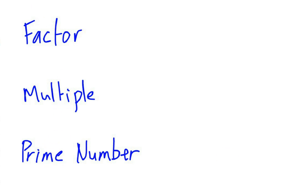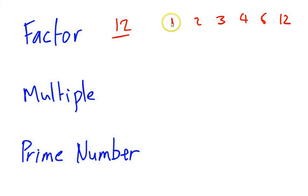This should be recapping what we already know. A factor is any number that goes into another number without leaving a remainder. For example, the factors of 12 are all the numbers that go into 12 without leaving a remainder. So factors of 12 are 1, 2, 3, 4, 6 and 12. We can multiply some of them together to give us 12: 1 times 12, 2 times 6, and 3 times 4 all equal 12.